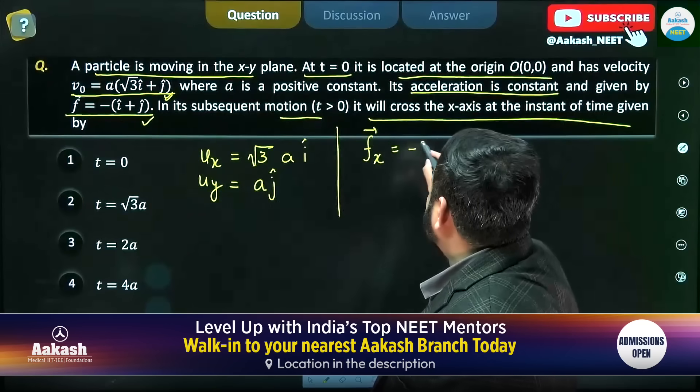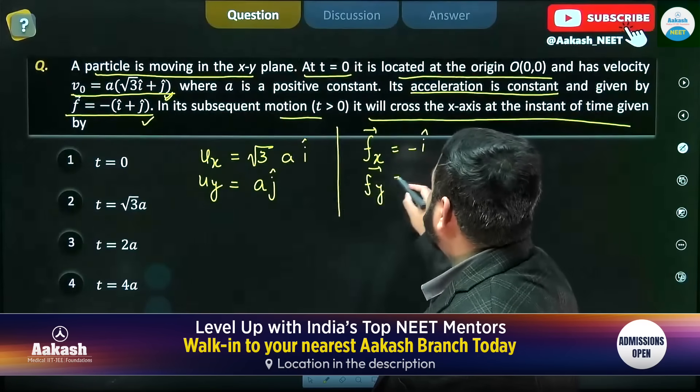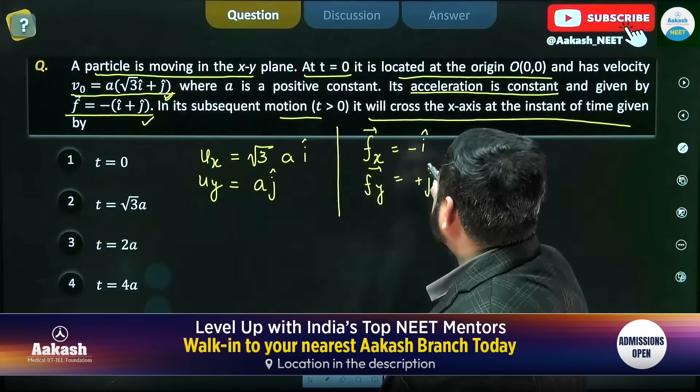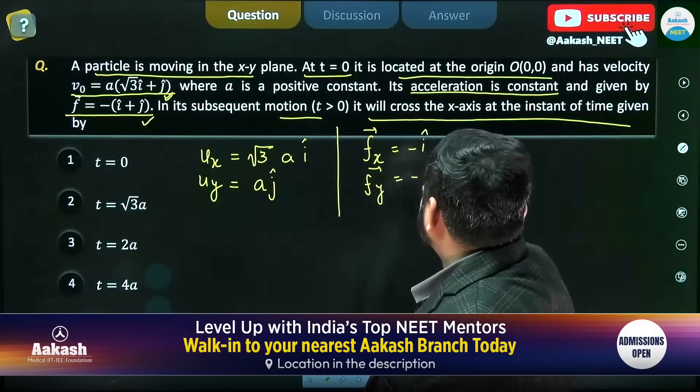Then fₓ = -a j and fᵧ here is equal to—no, it is also minus—fᵧ = -a j.